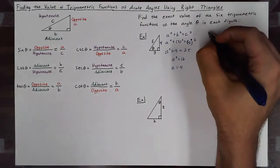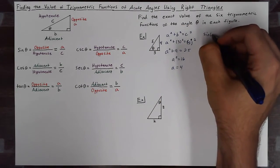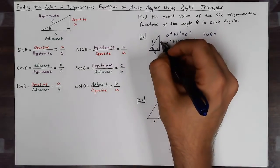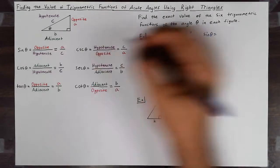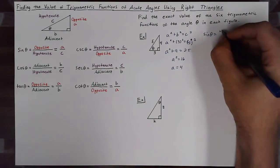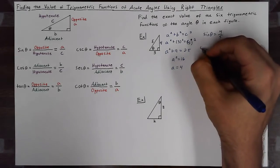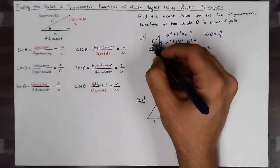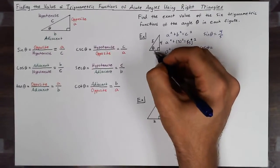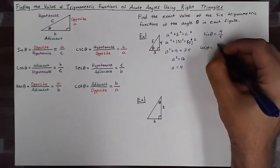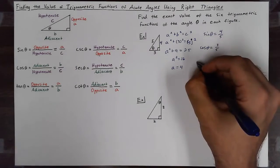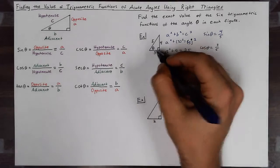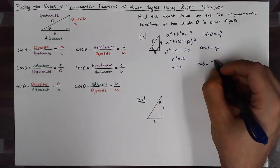Now I can go through and evaluate all of the trig functions. Sine of theta would be four over five, opposite over hypotenuse. Cosine of theta will be adjacent over hypotenuse, so three over five. Tangent of theta will be opposite over adjacent, so four over three.